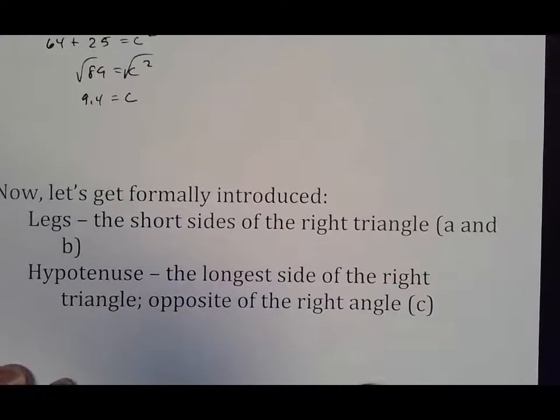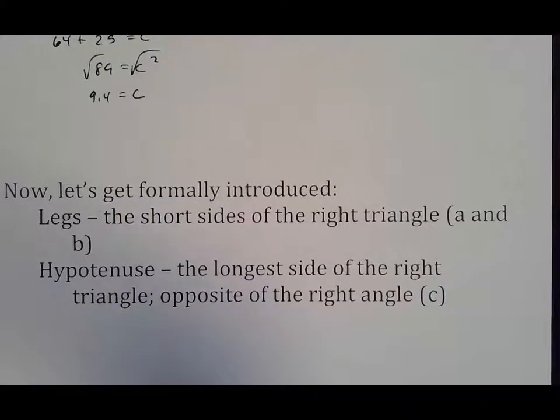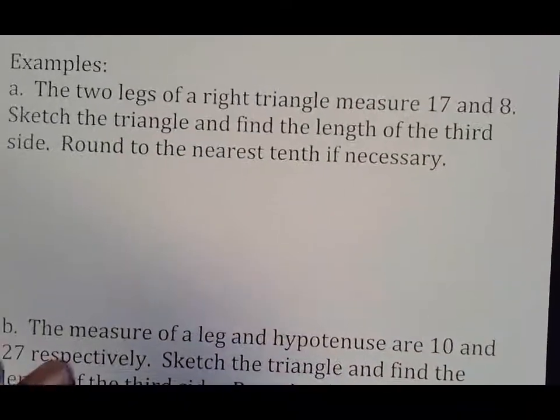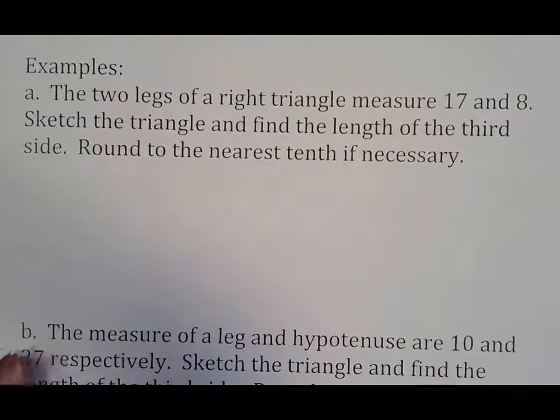Now let's get formally introduced. Again, legs are the short sides of the right triangle, which are A and B. The hypotenuse is the longest side, which is opposite of the right angle, which is C. And then from there, let's just go ahead and get to the work and let you get to some practice. And again, ask questions.